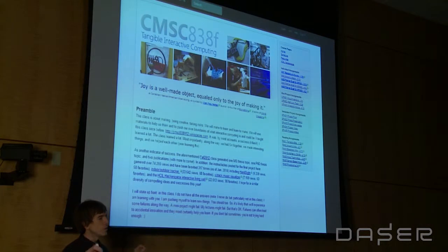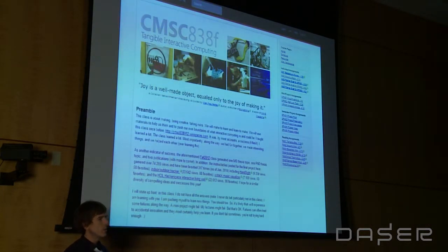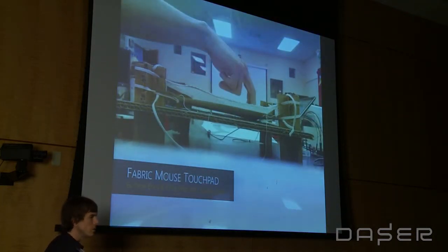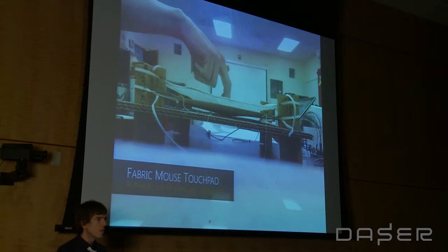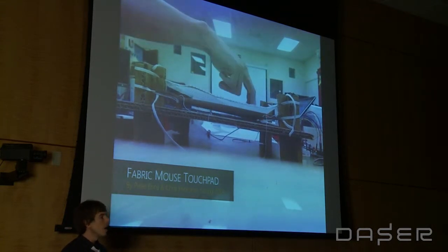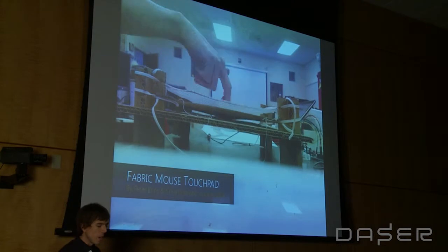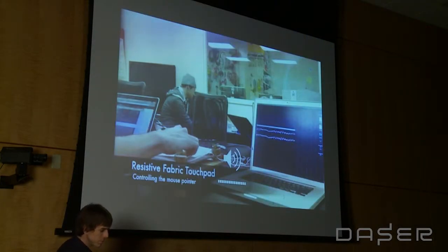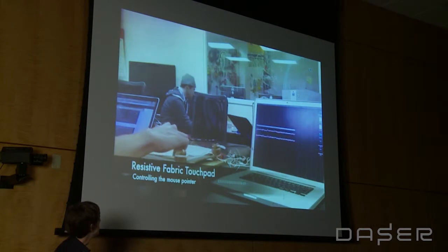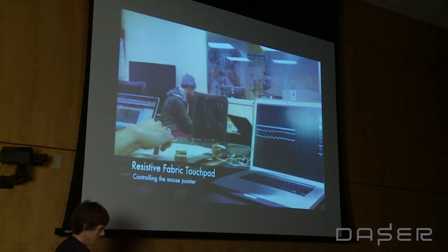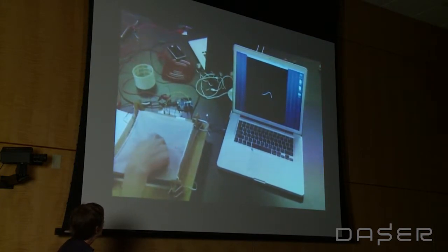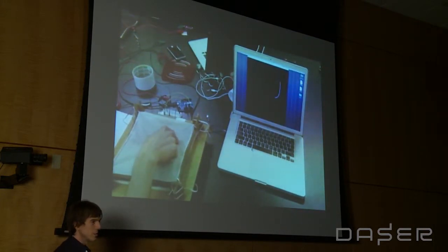I want to start with two quick projects from my course — little three-week projects — and then we'll transition to talking more about textiles. The first one is the fabric mouse touchpad. It's very much like the touchpad on your laptop, but it's built with resistive and conductive fabrics, conductive thread, and some cardboard. You'll see the mouse moving as he positions his finger onto these fabric pads.